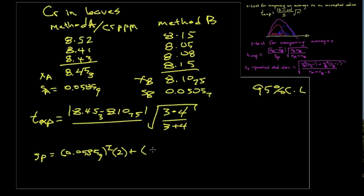Plus the variance in the second set, 0.05057, that quantity is squared. The number of degrees of freedom in the second set is 4 minus 1 or 3 degrees of freedom here.